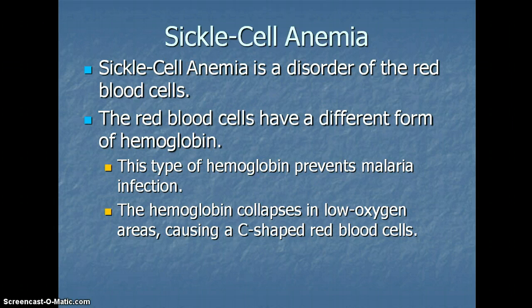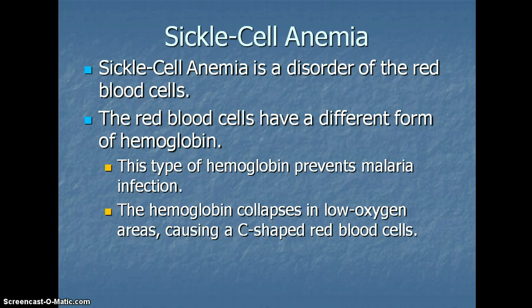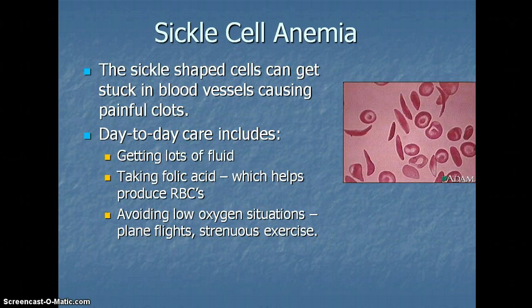Sickle cell anemia is a disorder of the red blood cells. Red blood cells affected by sickle cell anemia have a different type of hemoglobin. The advantage to this type of hemoglobin is that it prevents malarial infection, which is a problem in many parts of the world. However, when this hemoglobin is in low-oxygen areas, like capillaries, it collapses, and it causes a C-shaped red blood cell. These sickle-shaped cells can get stuck in blood vessels, causing painful clots. Some day-to-day things to help include making sure that they get a lot of fluid, which will minimize the number of blood cells that are forming sickles.